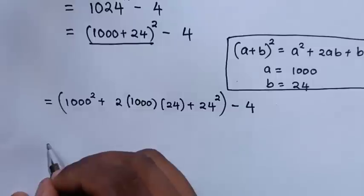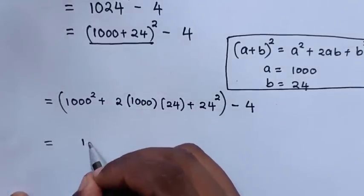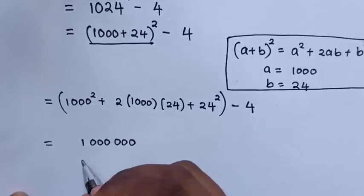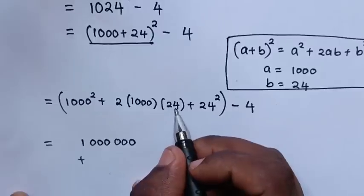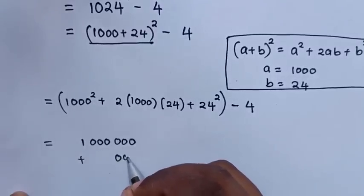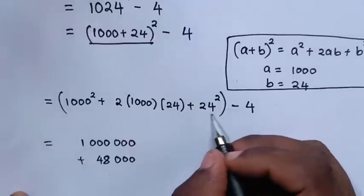This will equal 1000 square, which is 1 million, 1 with 6 zeros, then plus 2 times 24 is 48. So it will be 48 times 1000, which is 48,000, then 24 square.